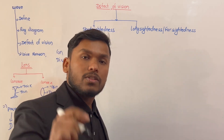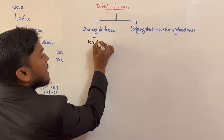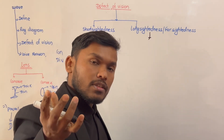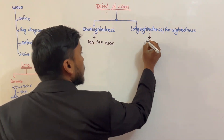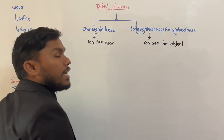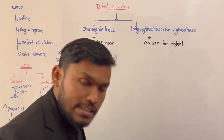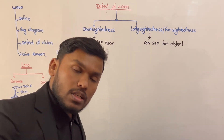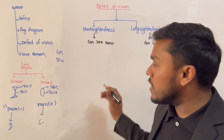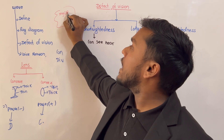Short sightedness — you can see near objects but cannot see far objects. Long sightedness — you can see far objects but cannot see near objects. So it's the medical name. What was the name of short or long sightedness? What was the medical name?